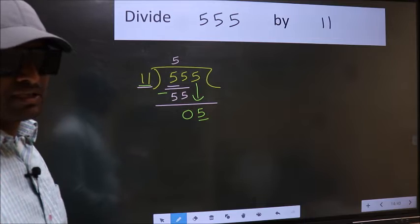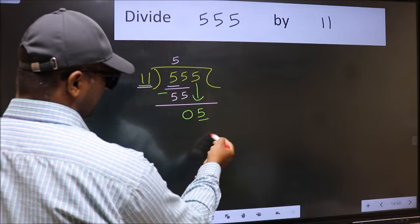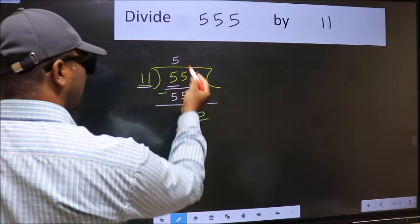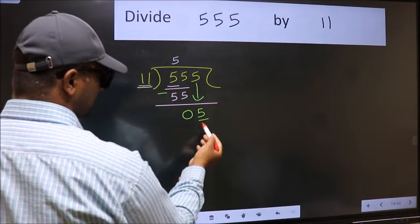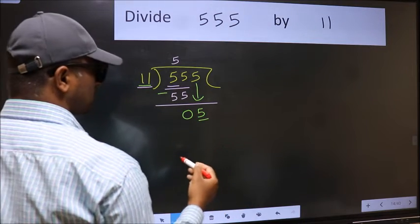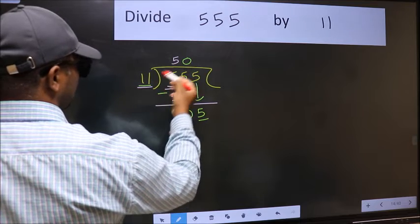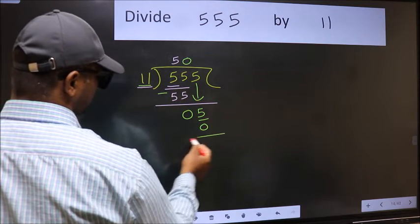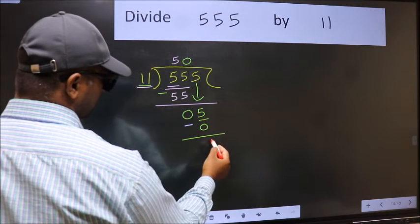Instead, what you should think of doing is, which number should we take here? If I take 1, we will get 11, but 11 is larger than 5. So what we should do is we should take 0. So 11 into 0 is 0. Now you should subtract. 5 minus 0 is 5.